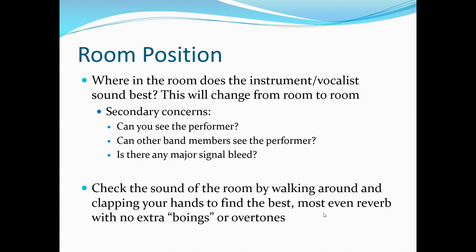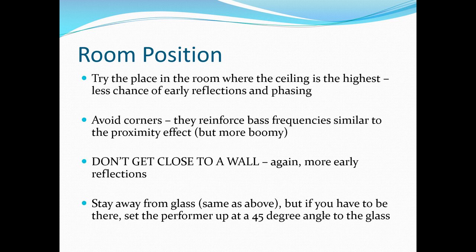The other thing is signal bleed. The vocalist might sound really awesome sitting right next to the bass amp, but you're going to get a lot of that amp noise coming through onto the vocal track. The way that you check the sound of the room is by walking around and clapping your hands to find the most even reverb with no extra boings or overtones. Try the place in the room where the ceiling is the highest — there's less chance of early reflections and phasing. Avoid positioning the vocalist or instrument in a corner, as corners tend to reinforce bass frequencies and sound boomy.